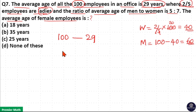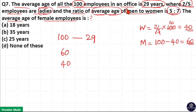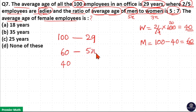Number of men is 60 and number of women is 40. The average age of men to women is 5:7, which means average age of men is 5x and average age of women is 7x. So average age of 60 men is 5x and average age of 40 women is 7x.